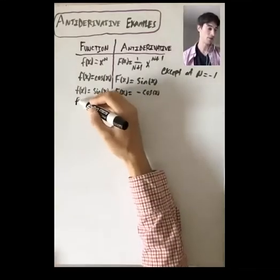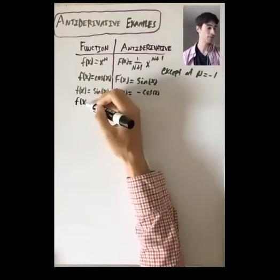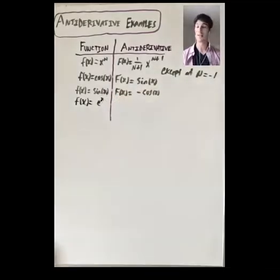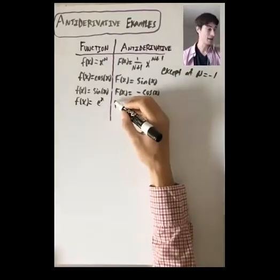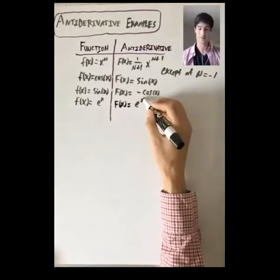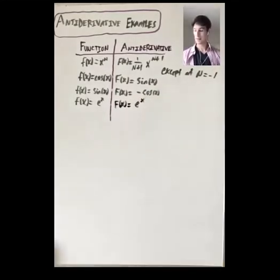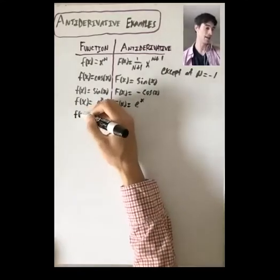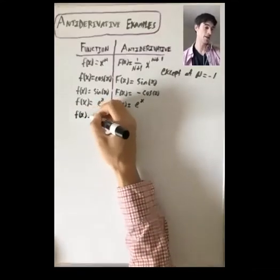What other kinds of functions do we know derivatives of? What about exponential functions? Like, what is the derivative of e to the x? It is e to the x. So if you want to find a function whose derivative is e to the x, one example is e to the x itself.